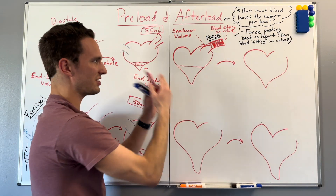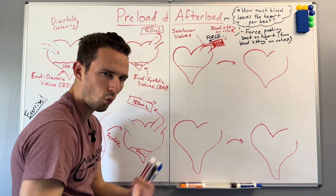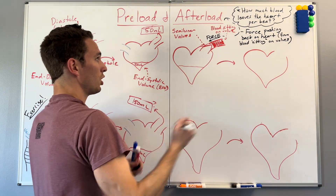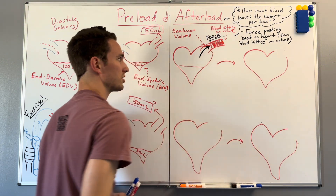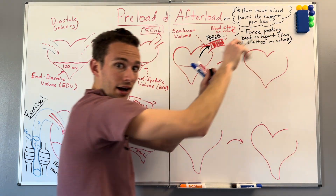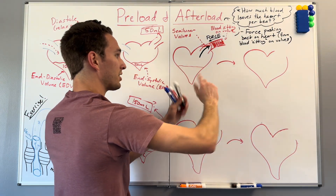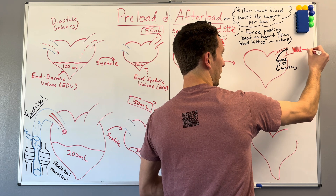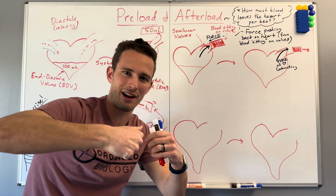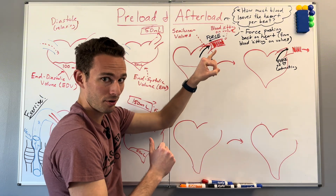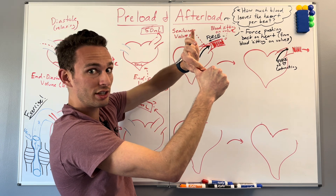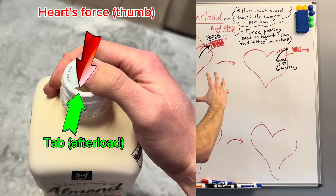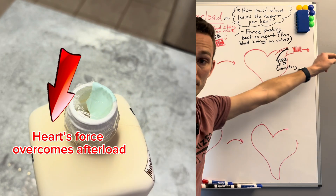The heart's goal is to get blood out through the semilunar valves, but it has to overcome the force of afterload. In order to get blood out, we have to overcome that force with an even stronger force, because we're not going to move that blood unless we force it out. As the heart contracts, that blood is forced outward, allowing it to circulate throughout the body. This is exactly like that little tab on the gallon: you had to press your thumb against it really hard, and eventually you overcame the force of the tab and popped through. Same with the blood — the heart overcame that force and popped open the valve.